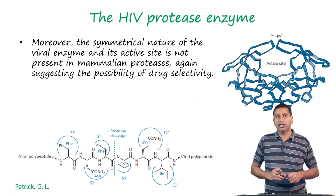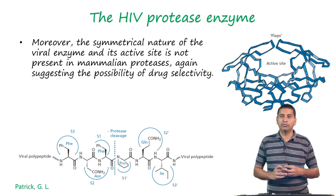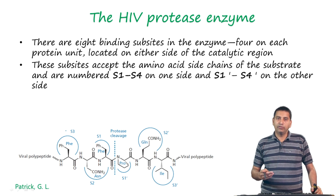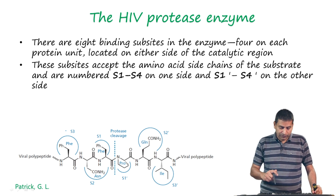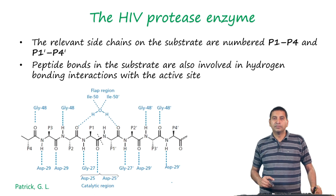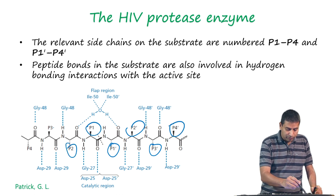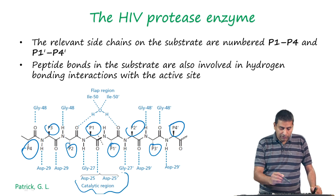The symmetrical nature of the viral enzyme and its active site is not present in mammalian proteases, representing a significant structural difference. In this enzyme there are 8 binding subsites — 4 on each protein unit — located on either side of the catalytic region, numbered S1 to S4 and S1' to S4' on the other side. The relevant side chains on the substrate are numbered P1 to P4 and P1' to P4'. The peptide bond in the substrate is also involved in hydrogen bonding interaction with the active site.